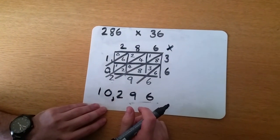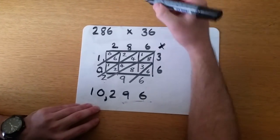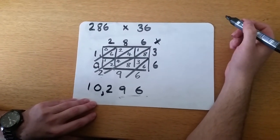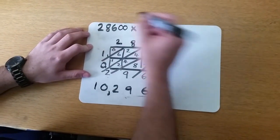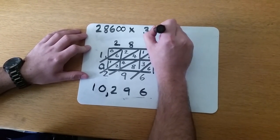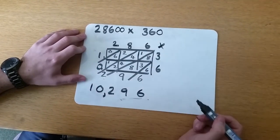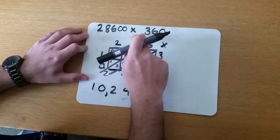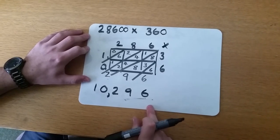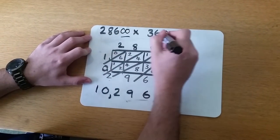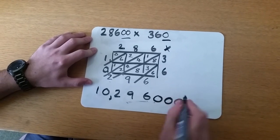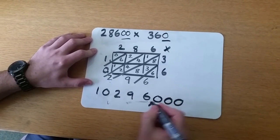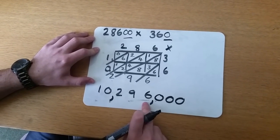Now what's useful about this method is that if we had multiples of 10, if we were multiplying multiples of 10, so for example 28600 times by 360. Again, this looks very, very difficult, but all we need to do is take these numbers and multiply them to give us this number, and then we just need to add this many zeros on the end. 0, 0, 0. And this number is 10,296,000.